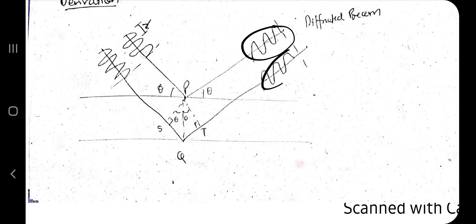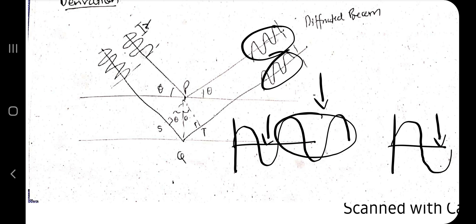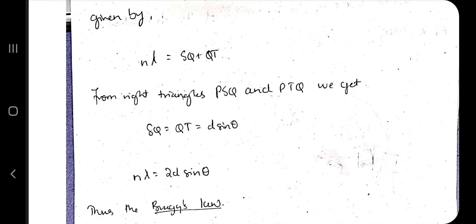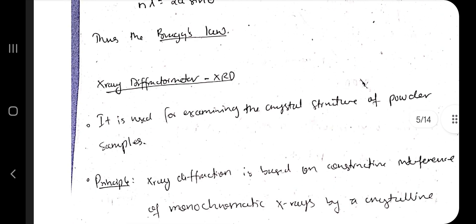nλ equals the extra path difference SQ + QT. The reason it is nλ is that waves may have traveled different numbers of cycles yet still be in phase. So nλ = SQ + QT. According to the geometry, SQ = QT = d sinθ. Adding them gives 2d sinθ, which equals nλ. That is Bragg's law.